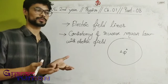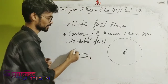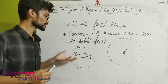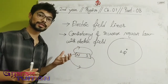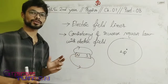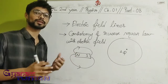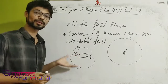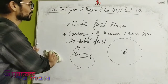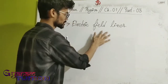An electric field cannot be seen like a magnetic field. In a magnetic field we have north pole and south pole, and magnetic field lines go from north to south. For an electric field, field lines are imaginary lines — they do not really exist. They are used to represent the electric field direction and strength.